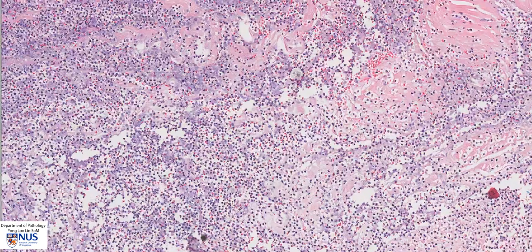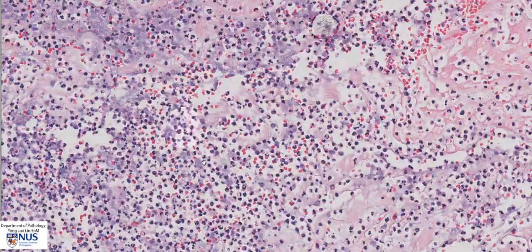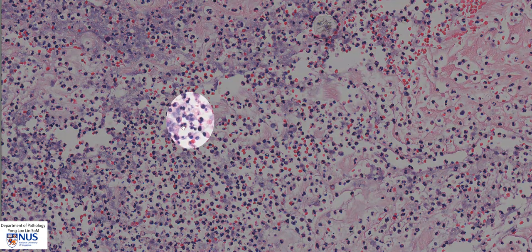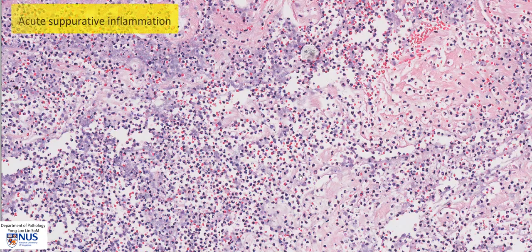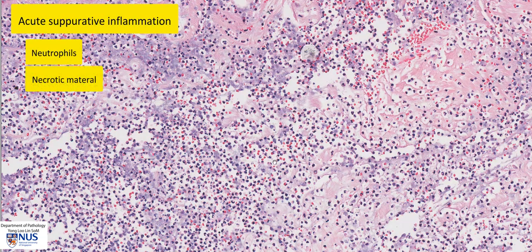We can see that most of the cells are neutrophils. We can appreciate the multi-lobed nuclei, and there's some bluish and pinkish necrotic material in between. Essentially, acute suppurative inflammation is composed of numerous neutrophils, necrotic cellular material, and sometimes we can also see the offending infectious agents. In the case of a furuncle and a carbuncle, one of the commonest infective agents is the bacteria Staphylococcus aureus.